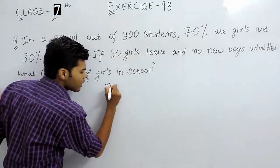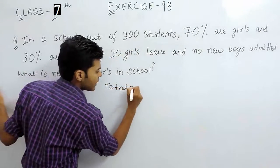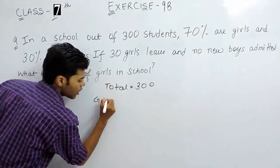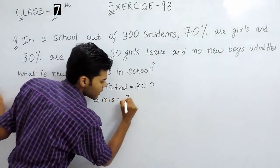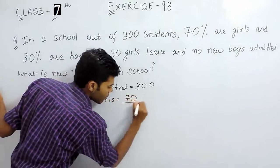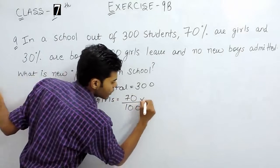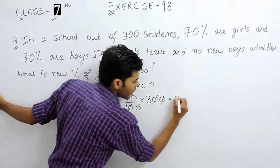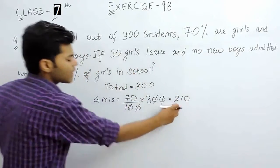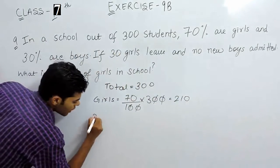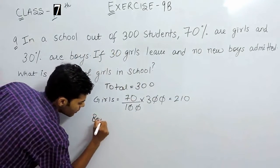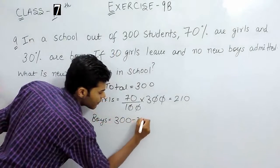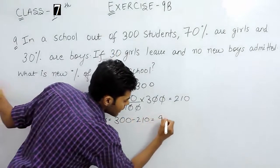So let us start. Total strength is equal to 300. Girls will be equal to 70 upon 100 multiplied with 300, that will give us 210. So 210 girls are there. Now number of boys will be 300 minus 210, that will be 90.